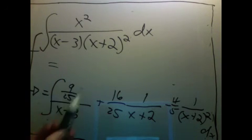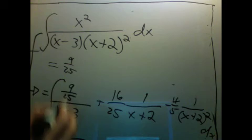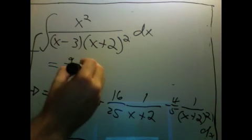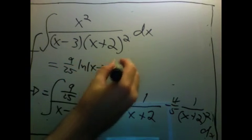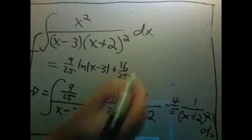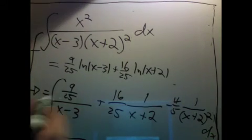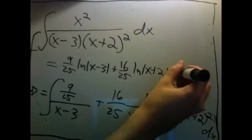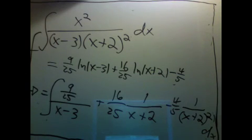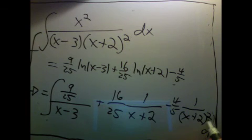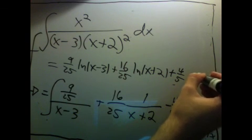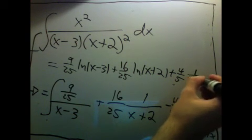The integral of this will be 9 over 25 times natural log x minus 3 plus 16 over 25 natural log x plus 2 minus 4 fifths. Well, this is x plus 2 to the negative 2. I add 1 to the power and divide by that, so I'll get a plus 1 over x plus 2 plus c.